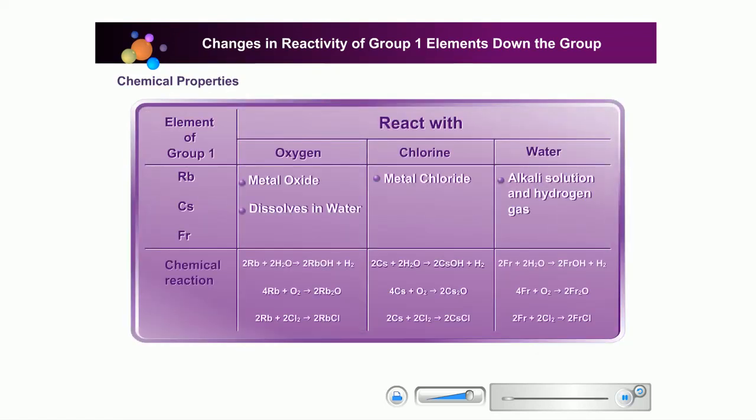All alkali metals have similar chemical properties because they have one electron in their outermost occupied shells. Therefore, the chemical properties for rubidium, cesium, and francium are the same as lithium, sodium, and potassium.